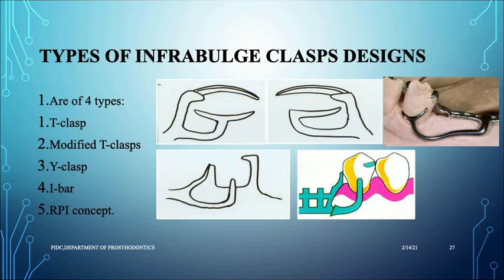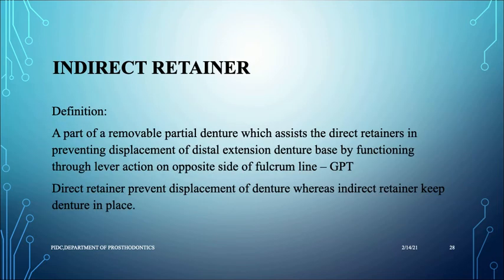For infra bulge clasps, the approach is from the tissue surface, engaging the undercut from below. There are four types: T clasp, modified T clasp, Y clasp, I-bar, and the RPI concept.